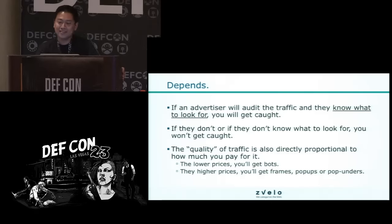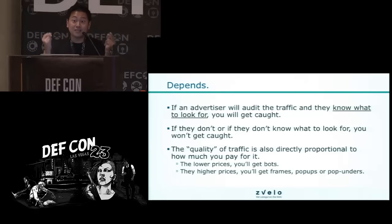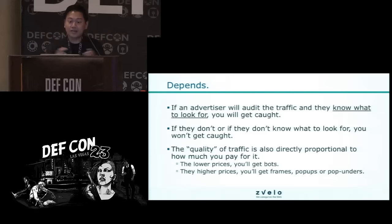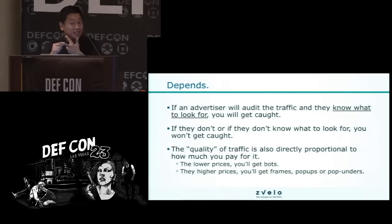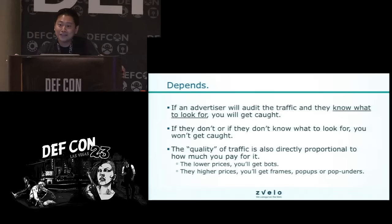Can I actually buy internet traffic and get away with it? If an advertiser knows what to look for — the attributes I was telling you about — yes, you will get caught. But if not, you will not get caught. Another thing I discovered: you get what you pay for. Lower prices, you really get bots. With higher prices when you start buying traffic, you'll get frames, pop-ups, and pop-unders. Wrapping up: we talked about the business of advertising — a $60 billion industry that keeps growing. The ecosystem: publishers, advertisers, demand side platforms for campaigns, supply side platforms managing impressions, and ad exchanges as marketplaces. Finally, publisher fraud, malicious content serving, and non-human traffic.